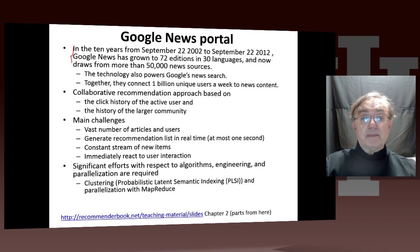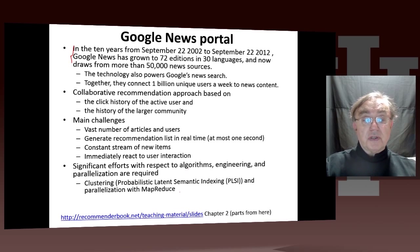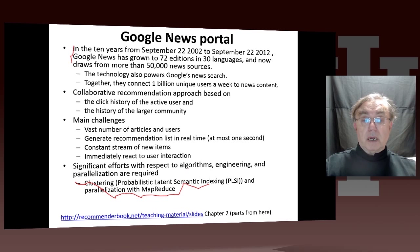This uses what the user has done and what the larger community has done. It's a huge big data problem — lots of users, lots of articles, and it must be done quickly. Search engines have to give answers in fractions of a second. There's also constant streaming of new items, which is a whole area of computer science. It uses techniques like clustering, probabilistic latent semantic indexing, and MapReduce to run large parallel jobs.